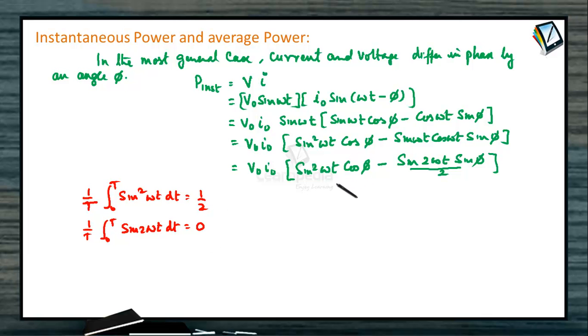Substituting these two values here we can get the average power. Power average will be now V naught I naught. Now for 0 to t we are taking the average sine square omega t we can write it as half, 1 by 2 cos phi minus sine 2 omega t we can write it as 0. So this can be written as V naught I naught by 2 into cos phi.